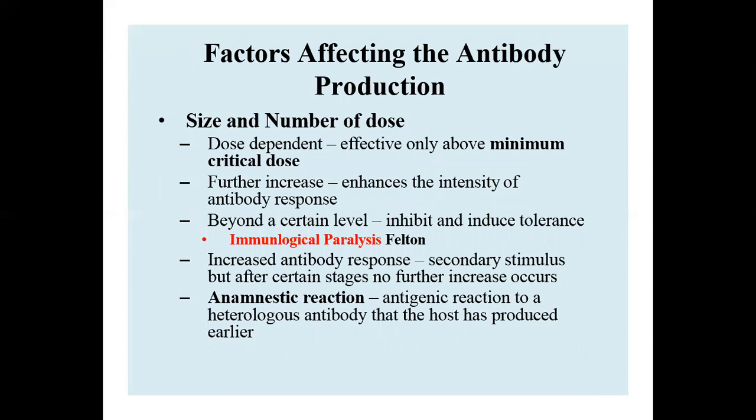Antibody production is dose dependent and effective only above a minimum critical dose. Below that minimum, antibody production is hampered. Beyond a certain level, it can induce immunological paralysis or tolerance. Production can be increased by secondary stimulus but does not increase further after certain stages.